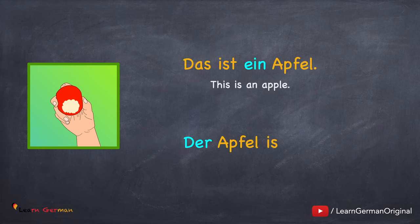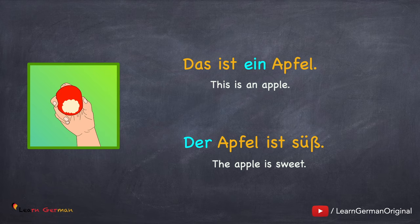Das ist ein Apfel. Der Apfel ist süß. Ein Apfel oder der Apfel. Ein and der are both articles. Der is a definite article, whereas ein is an indefinite article or unbestimmter article. Let's see when to use which article.